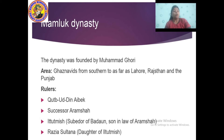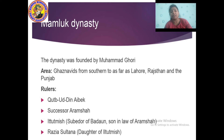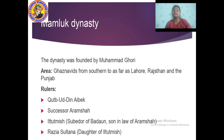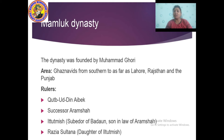After Gauri's death, Qutbuddin Aibak started ruling the nation and established his own dynasty, named the Slave Dynasty — that is why Qutbuddin Aibak's dynasty is called the Slave Dynasty. His successors included Aram Shah, Iltutmish — who was governor of Badaun and son-in-law of Qutbuddin Aibak — and Razia Sultan, the daughter of Iltutmish.